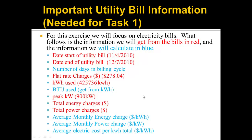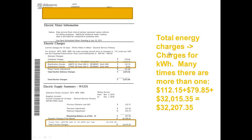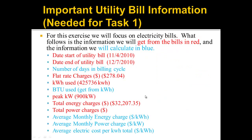Now let's look for the total energy charges. The total energy charges are charges for kilowatt hours. Remember, kilowatt hours are energy and kilowatts are power. We want to find everywhere there's a calculation on the bill involving kilowatt hours. We can see there are two up here and one down here. The bill might also just say 'energy charges.' We have to add all those up and we get a total of about $32,200. We'll update the table.